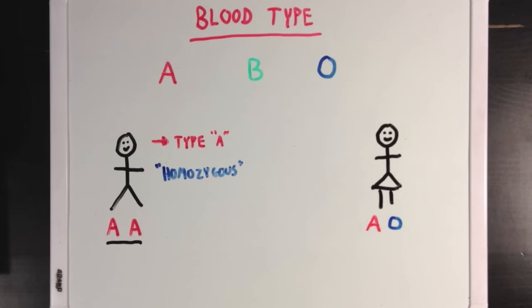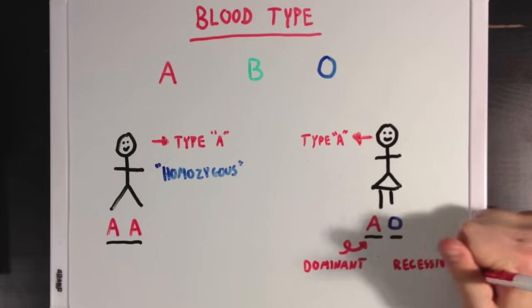Now in the case of the girl, is she going to have blood type A or blood type O? Well it turns out that she's going to have blood type A, and that's because the A allele is the dominant allele, while the O allele is the recessive allele.